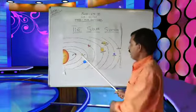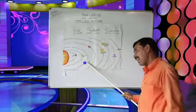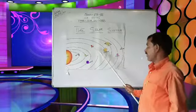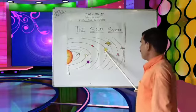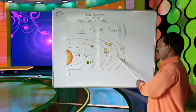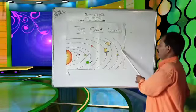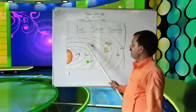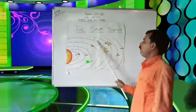First, Mercury. Second, Venus. Third, Earth. Fourth, Mars. Fifth, Jupiter. Sixth, Saturn. Seven, Uranus. Eight, Neptune. These are the eight planets.